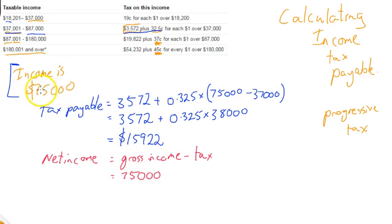That's equal to gross income, $75,000, that's the money you made, minus the tax you had to pay, $15,922. So that's going to be $59,078.